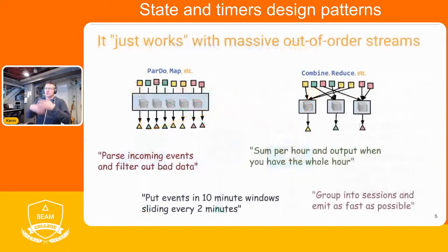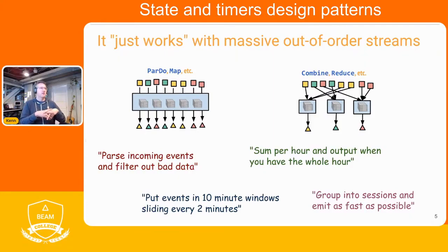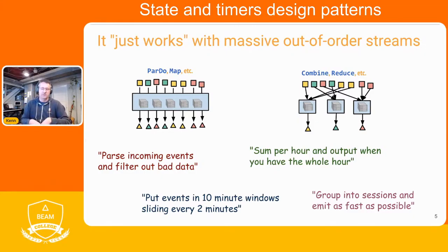Those are the two fundamental primitives — map and reduce, there's no magic. In Beam we also have windowing. When you do an aggregation and gather up elements for one key, you're also gathering by some event time window. That makes it work automatically with huge streams that can be out of order. These two primitives still work just fine.